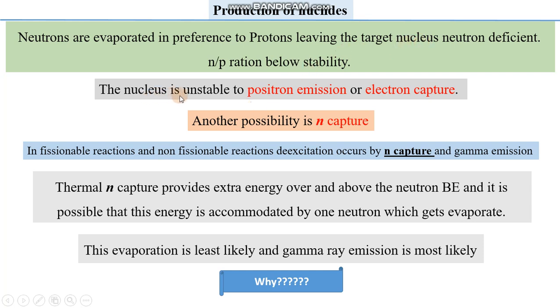The nucleus is now unstable with respect to positron emission or electron capture. What is positron emission and what is electron capture?